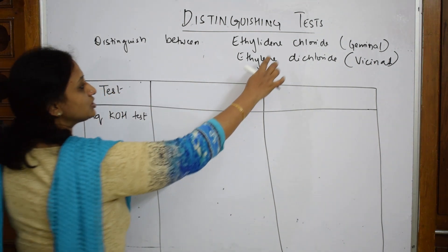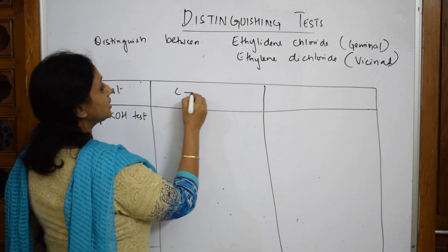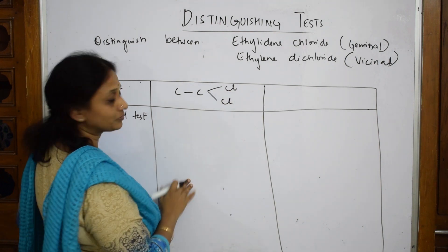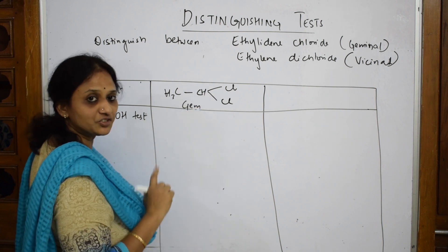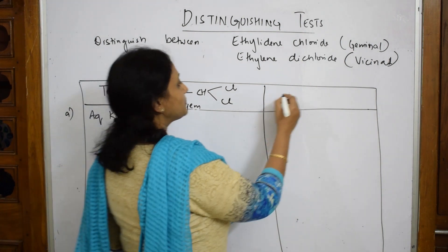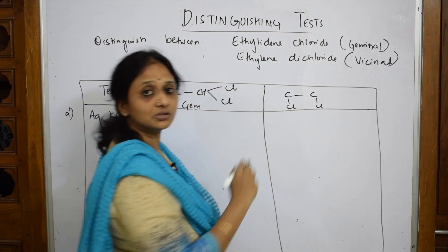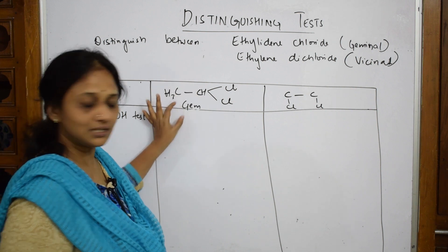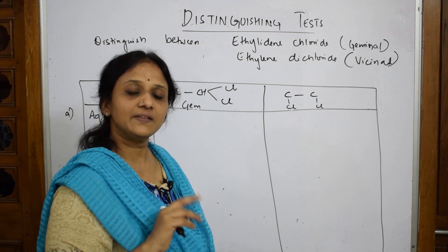When I speak about geminal halide, just see ethylidene chloride — both the chlorine atoms are present on the same carbon. So CH₃CHCl₂ is a geminal halide. When I say vicinal halide, the chlorine atoms are present on adjacent carbons — 1,2. If the halogen is present on the same carbon, it is a geminal halide. If the halogen is present on two different adjacent carbon atoms, then we call it vicinal.